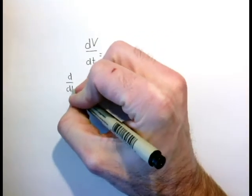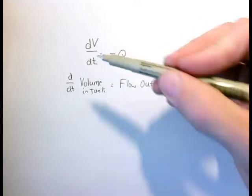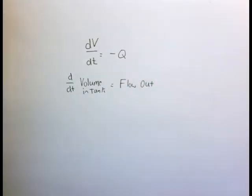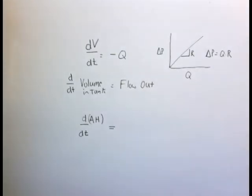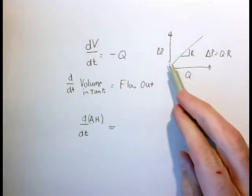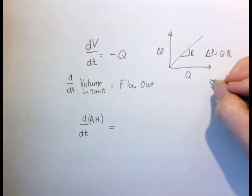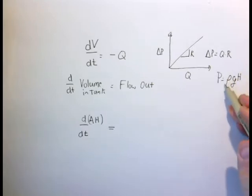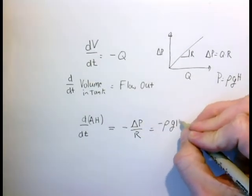Now let's see if we can explain this data quantitatively. We write that the time rate of change of the volume in the tank equals the negative of the volumetric flow rate out. The volume is the area of the tank times the height. We also know from our single-tube data that pressure equals Q times R, and the pressure in our tank is ρgh. Substituting in, Q equals -ΔP/R equals -ρgh/R.